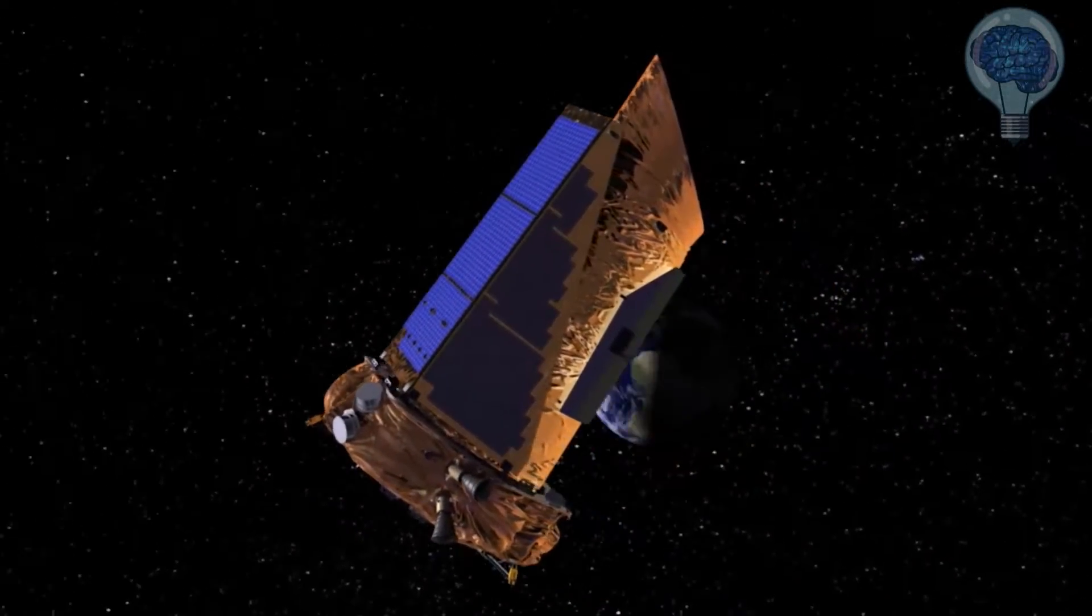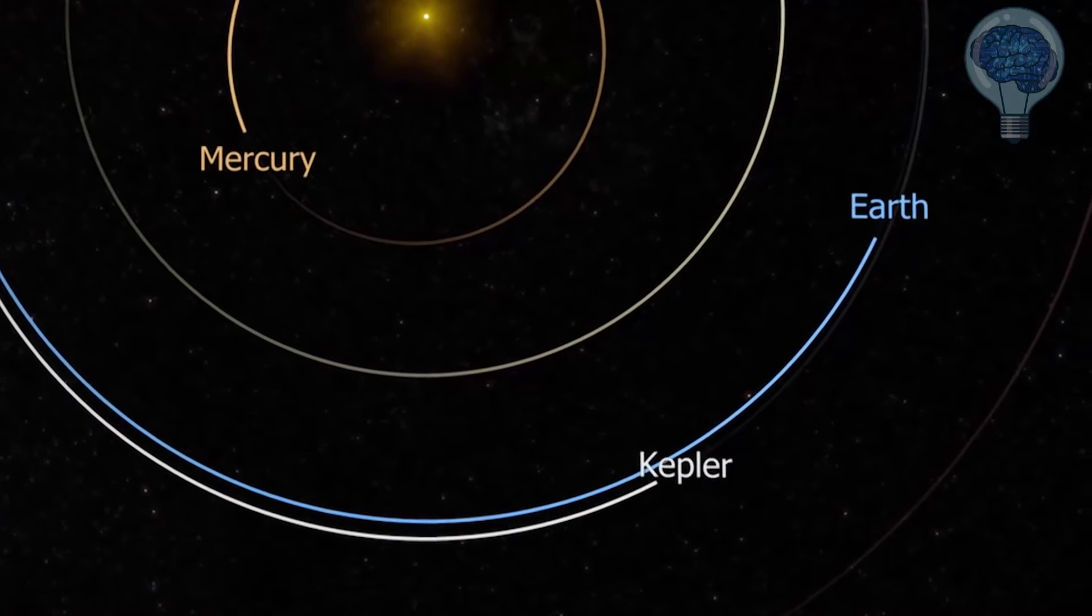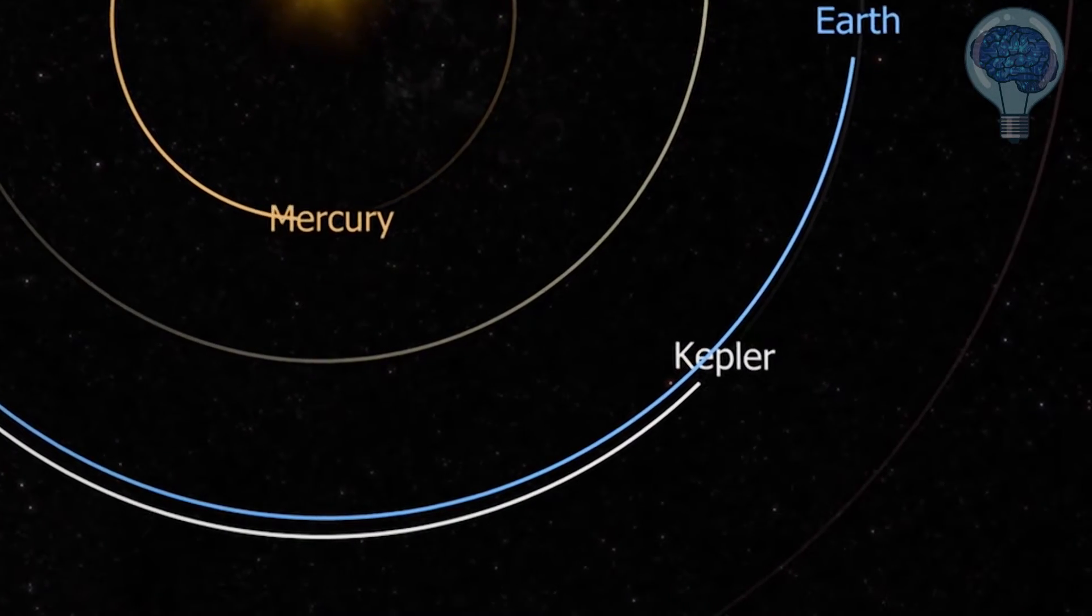NASA's Kepler telescope trails behind Earth in its orbit. Since 2014, Kepler has been looking outward along the ecliptic, the plane of our solar system.